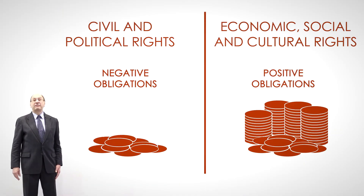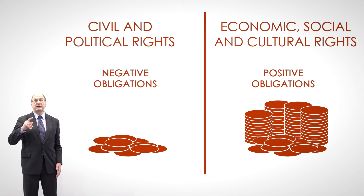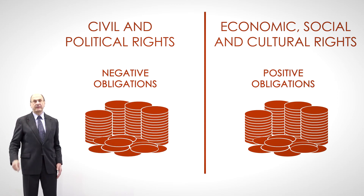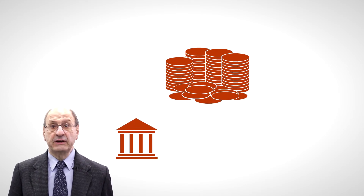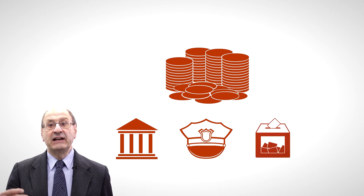For many years now, most academics have come to reject this distinction as simplistic. Among other arguments, they point out that the protection of civil rights also implies considerable state expense. For instance, it is necessary to pay for a well-endowed judiciary, for police bodies, and for public entities to organize and supervise electoral rolls and public elections.